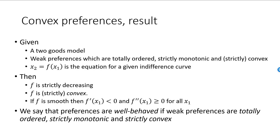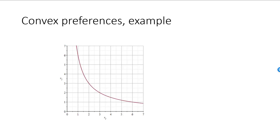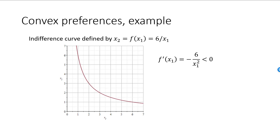If weak preferences are totally ordered, strictly monotonic, and strictly convex, then preferences are said to be well-behaved, and this is often an assumption we make on preferences. Here is an example of an indifference curve consistent with well-behaved preferences: x2 = 6 / x1, where x1 must be strictly positive. The derivative of this function is −6 / x1², which is negative for all allowed values of x1, confirming the function is strictly decreasing. The second derivative is 12 / x1³, which is always strictly positive, so f is a strictly convex function. Of course, to demonstrate that the consumer has well-behaved preferences, we must perform the same demonstration for every indifference curve.